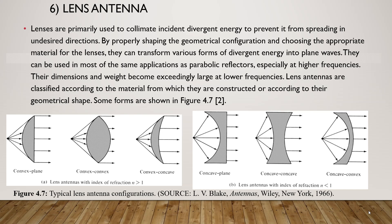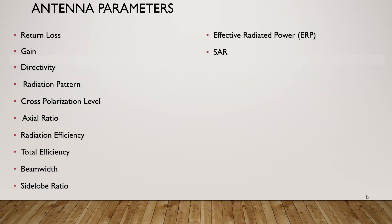Antennas are classified according to the material from which they are constructed or according to their geometrical shape. Some forms are shown in figure 4.7. In this section, the definition of antenna parameters will be given. The first parameter is return loss. Return loss is the measure of how well the impedance of an antenna matches the impedance of the transmission line or source to which it is connected.